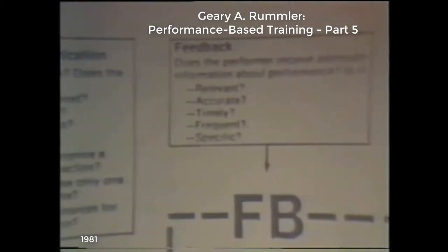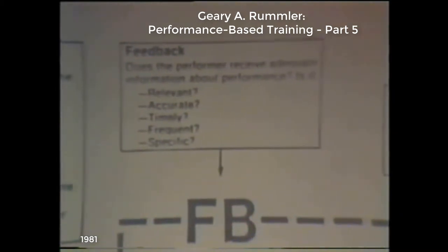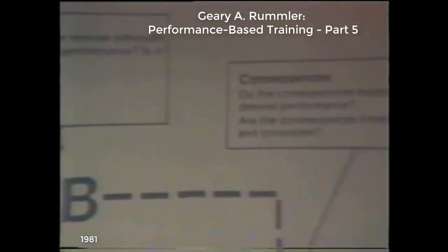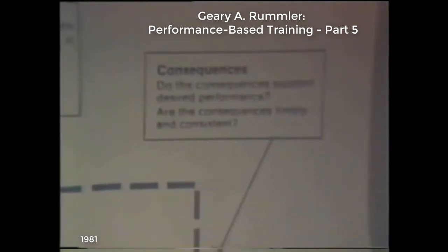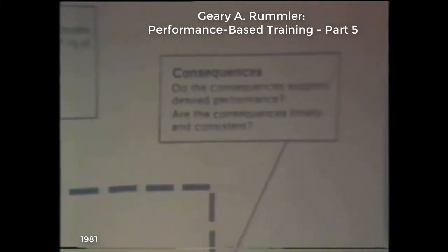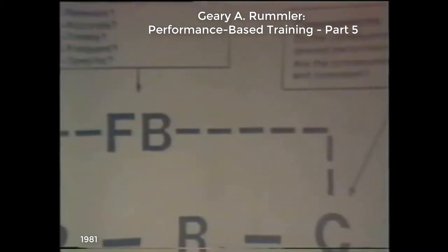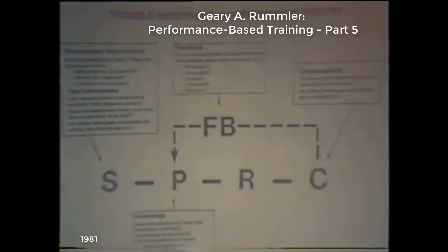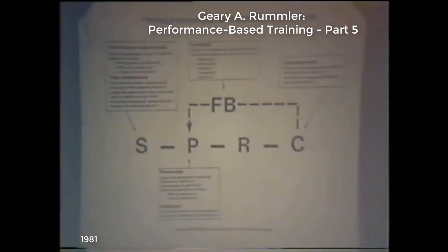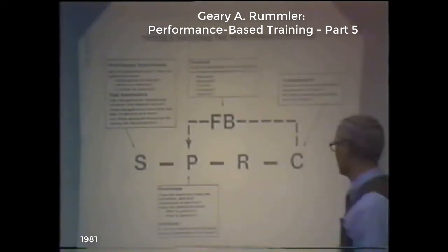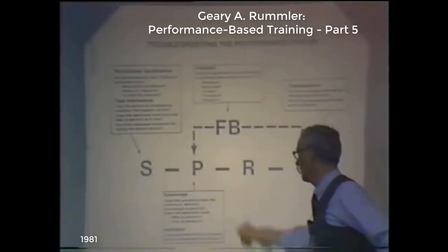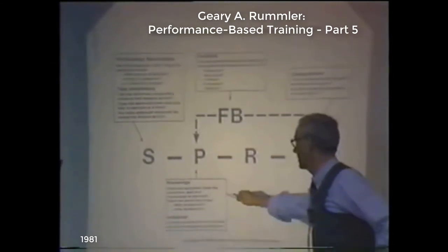We've got to write a prescription. And all our experience in the 15 years of doing this says that there's very seldom one thing wrong — there are usually a couple of things out of balance in the performance system that have to be corrected. Where we take the hard wrap in training is that since the performer is the most visible piece, when we don't see something happening, we go to training.